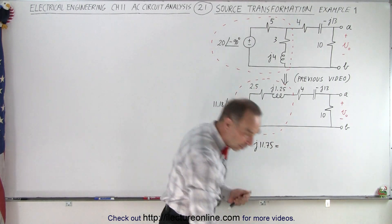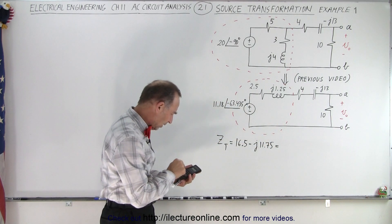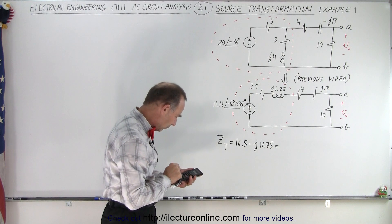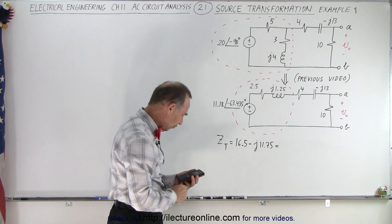And let's go ahead and put that in magnitude and phase angle format. 16.5 squared plus 11.75 squared equals, take the square root, that would be 20.256.